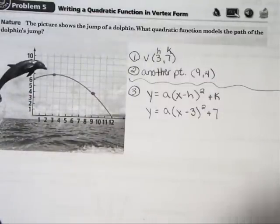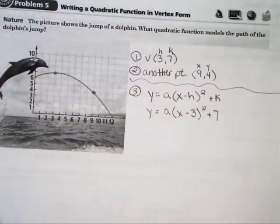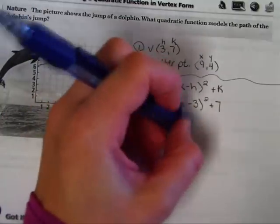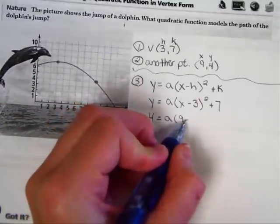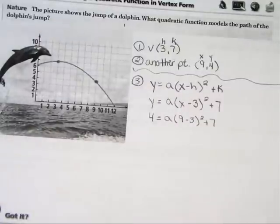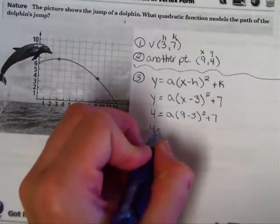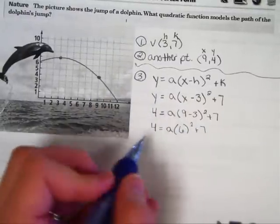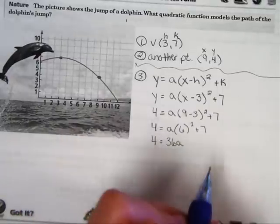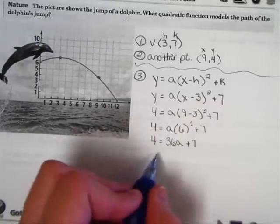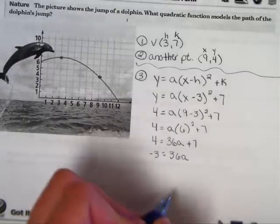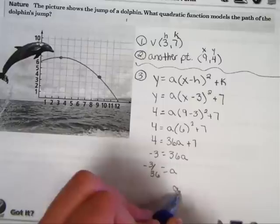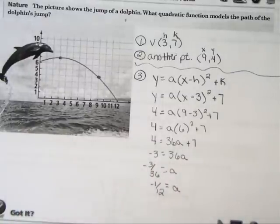Well, the other point is an x and a y. I'm going to write x above the 9 and y above the 4. Let's plug those in. 4 equals, y became a 4, a times, instead of writing x, I'm going to write 9 minus 3, quantity squared, plus 7. You'll notice now the only thing we have to solve for is a. Let's multiply this through. 4 = a(6)² because 9 minus 3 is 6, plus 7. 4 = 36a plus 7. Subtract 7. -3 = 36a. Divide by 36 and reduce. That becomes -3/36, and then it has to be reduced to -1/12.